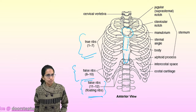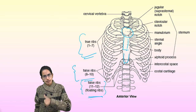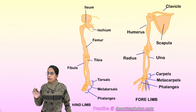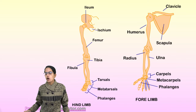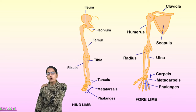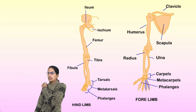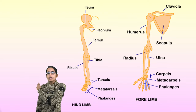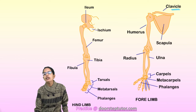Having covered the axial skeleton — skull, vertebral column, and thorax — let's move on to the appendicular skeleton. Starting with the upper limbs: this is what is called the shoulder girdle. The shoulder girdle has a clavicle between the neck and the shoulder, and the scapula at the back.